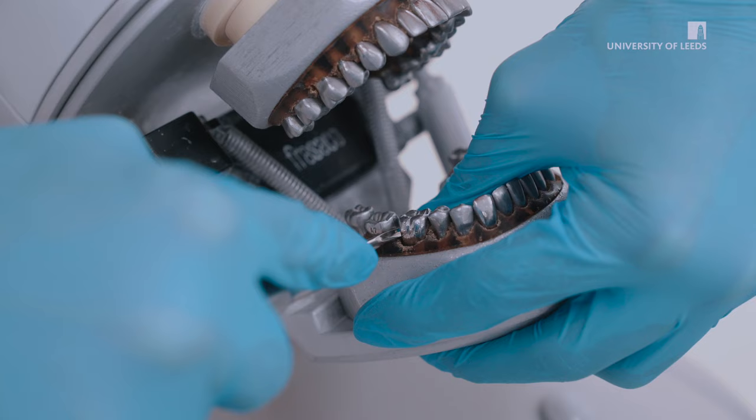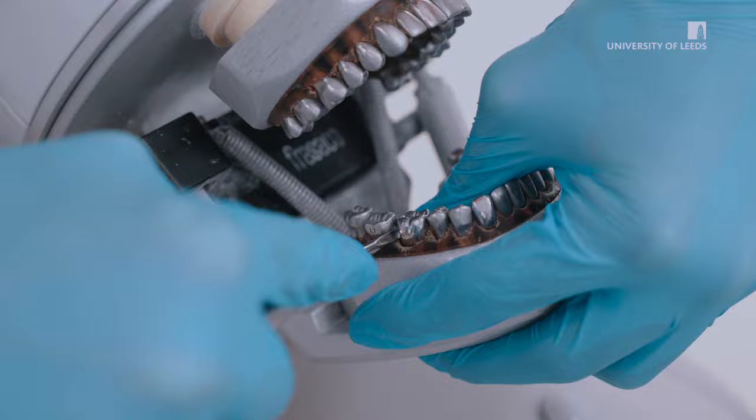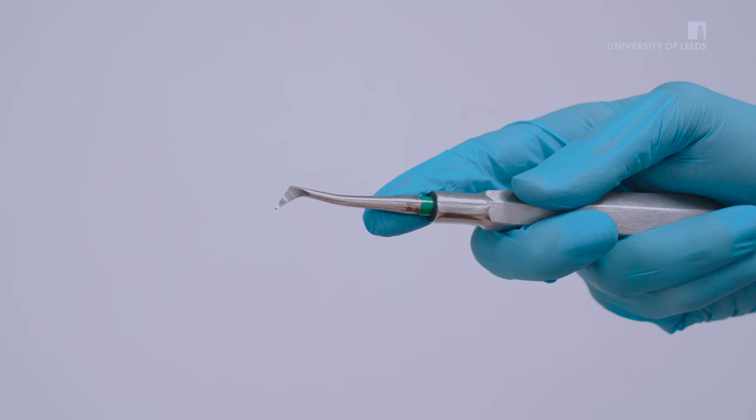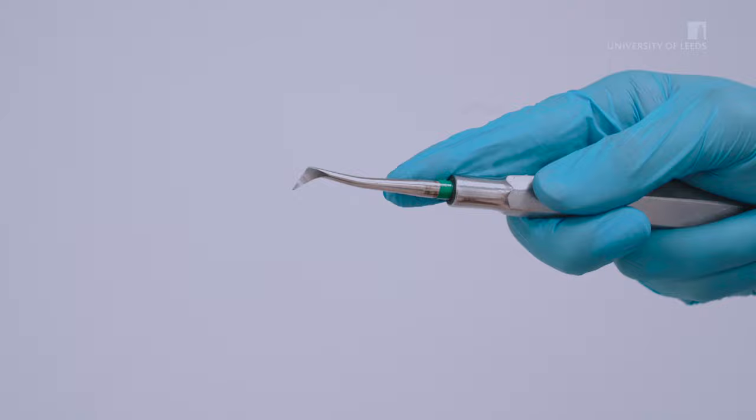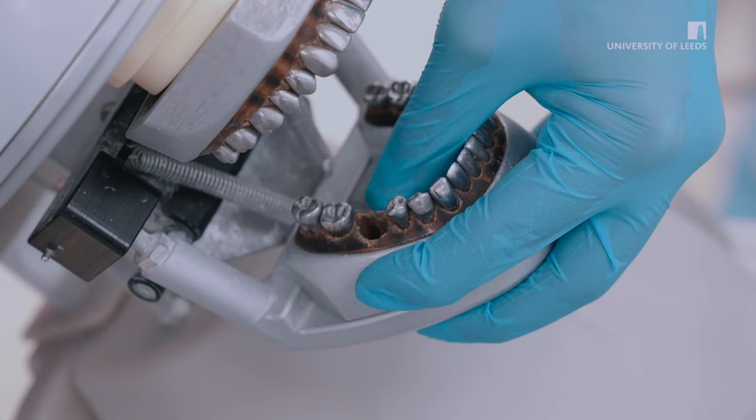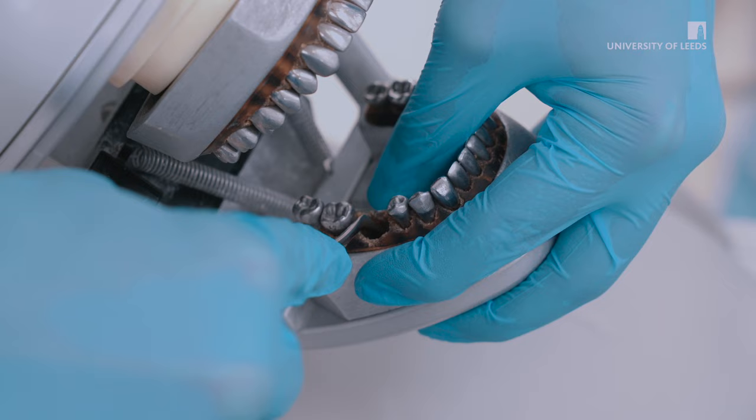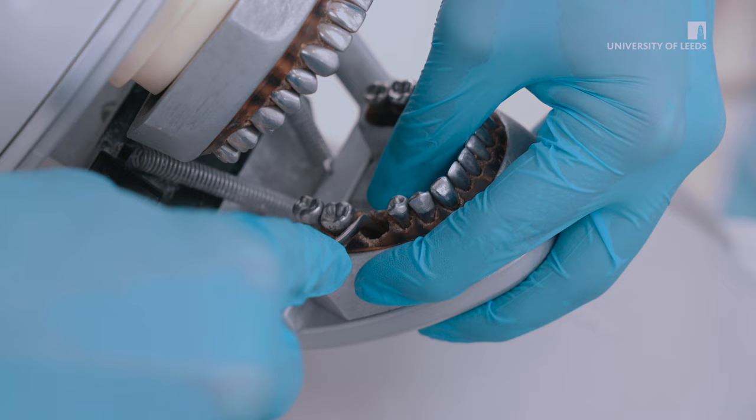Caution must be taken not to use the adjacent tooth as the fulcrum as this risks unnecessary damage to that tooth. The wheel and axle principle is commonly used with criers elevators to remove retained roots. The sharp blade engages the retained roots and they are carefully rotated out of the socket. This is very useful in multi-rooted teeth where a root may have fractured during an extraction and the criers can be used to break the interceptal bone to gain a purchase point for elevation of the fractured root.